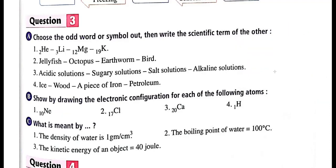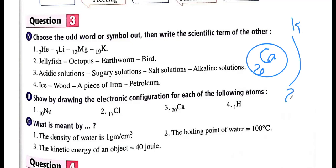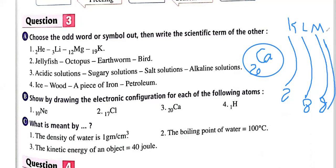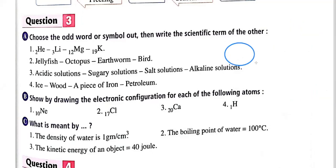Chlorine electron configuration: K=2, L=8, M=7. Now calcium: atomic number 20. K takes 2, L takes 8, M takes 8. That's 2 + 8 + 8 = 18 out of 20, so 2 are left for level N. Calcium configuration: K=2, L=8, M=8, N=2. Lastly, hydrogen: atomic number 1. K takes only 1 electron. That is the electron configuration of hydrogen.